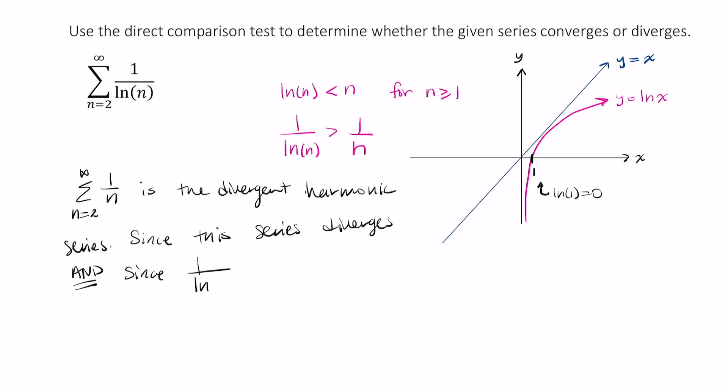Since 1 over the natural log of n is greater than 1 over n, it follows by the direct comparison test that our original series diverges as well.